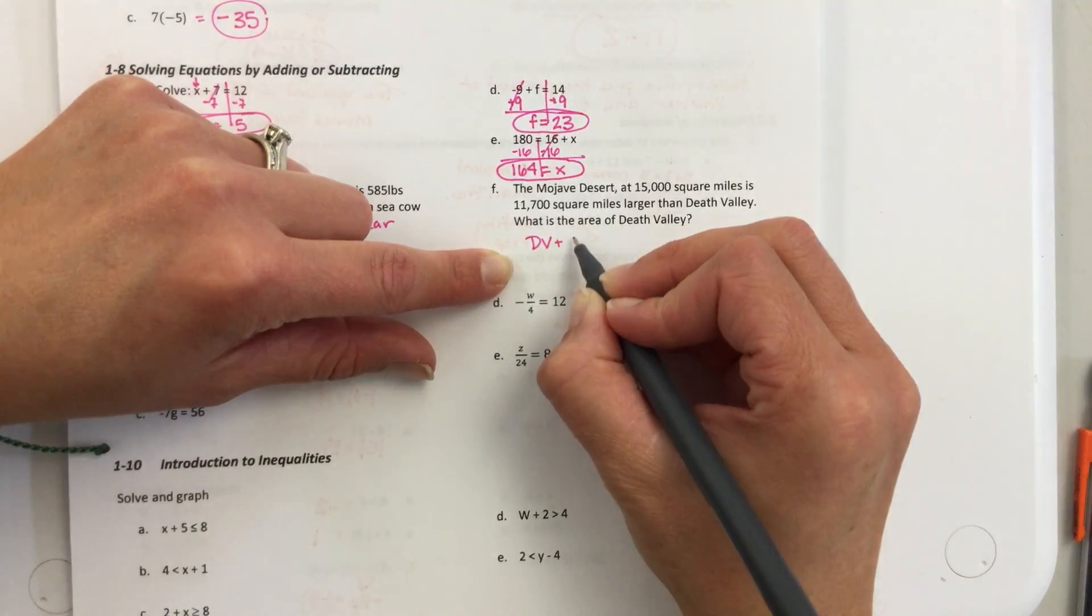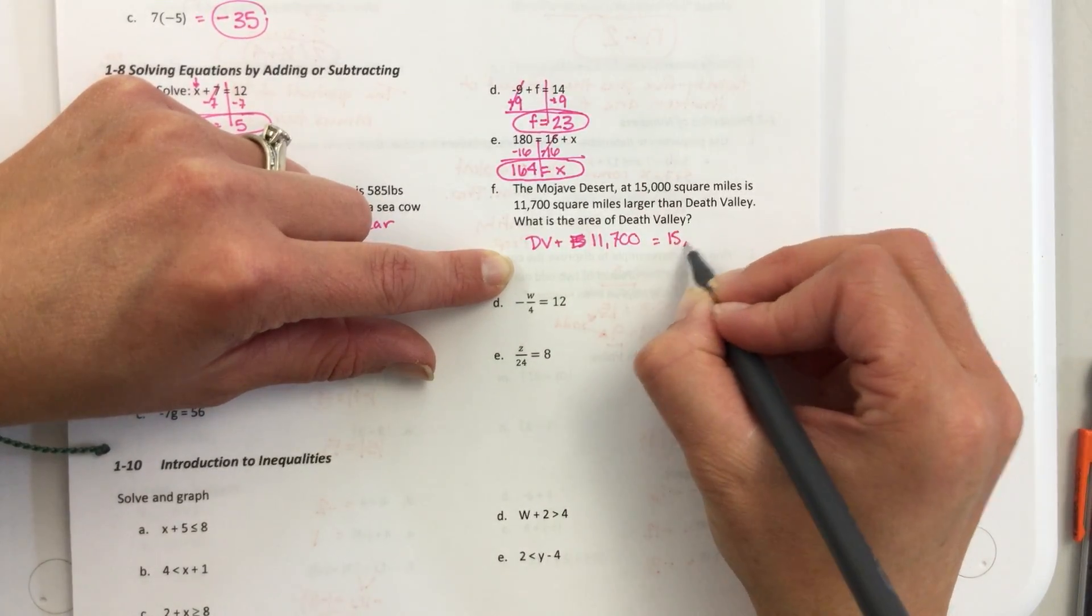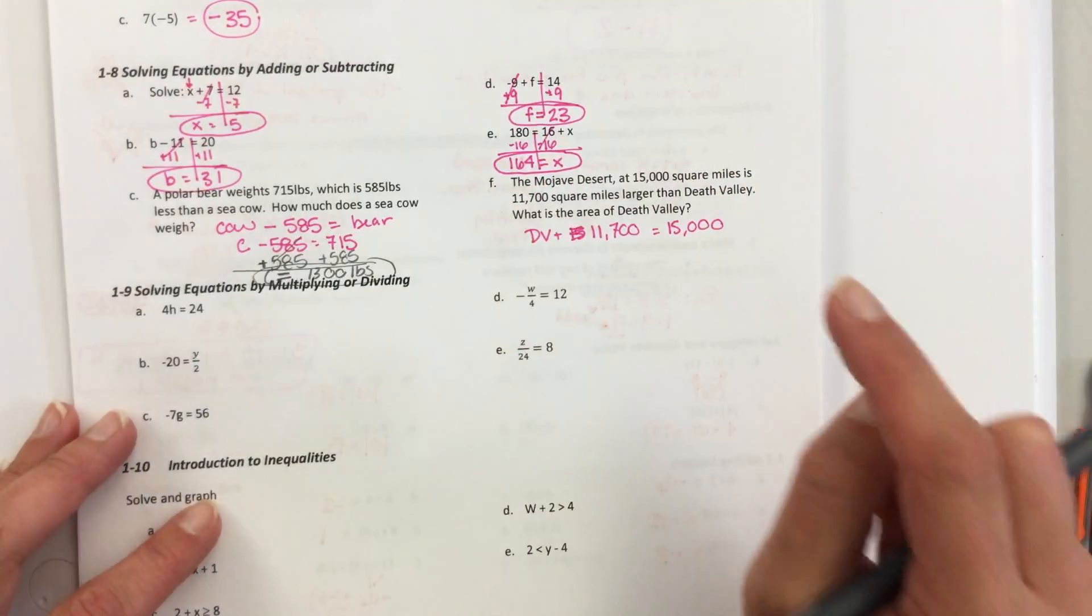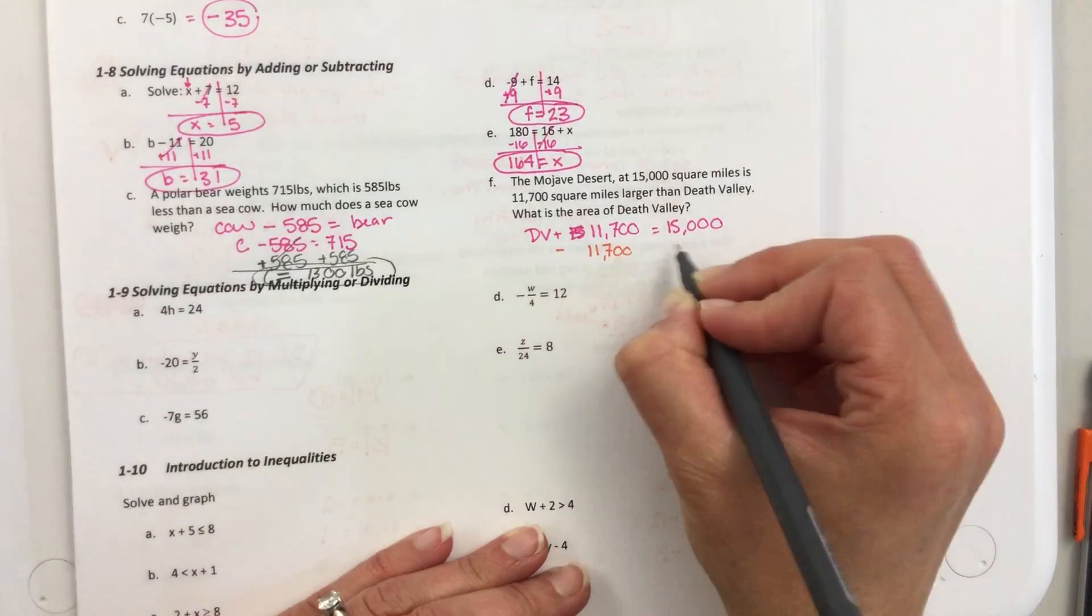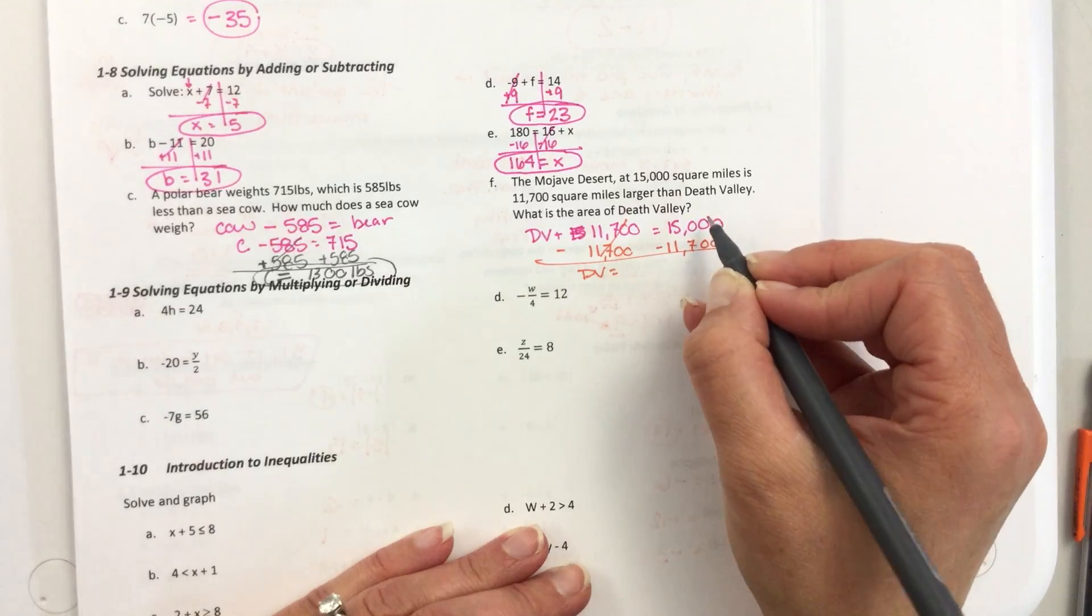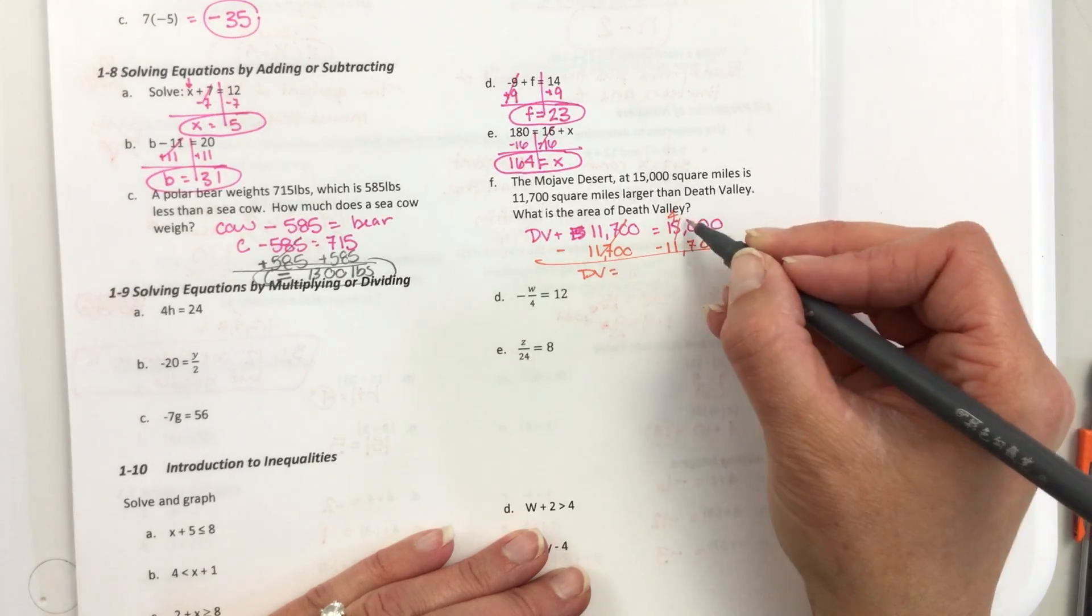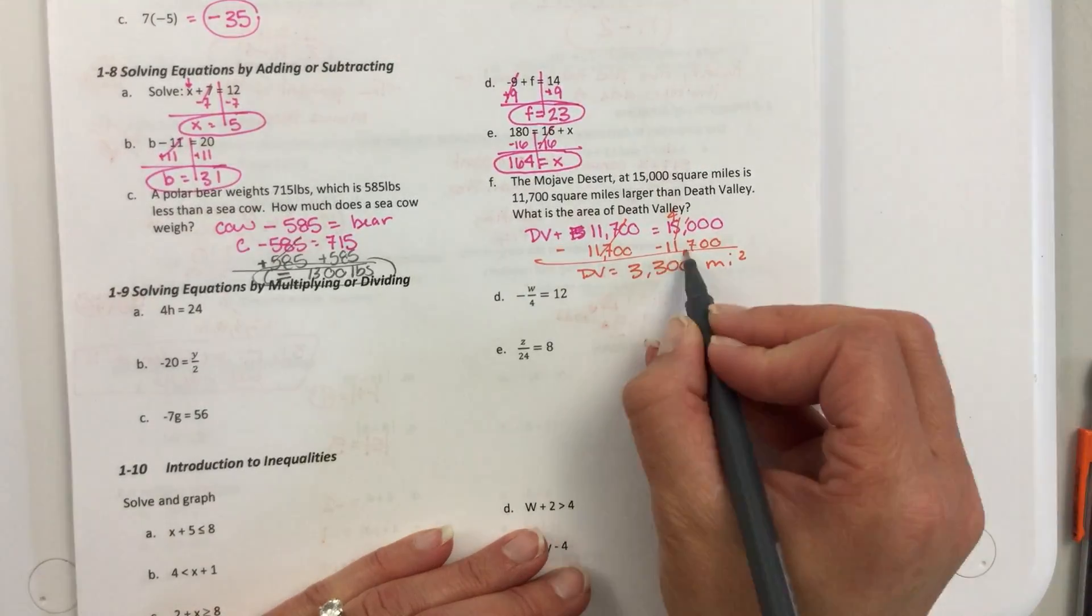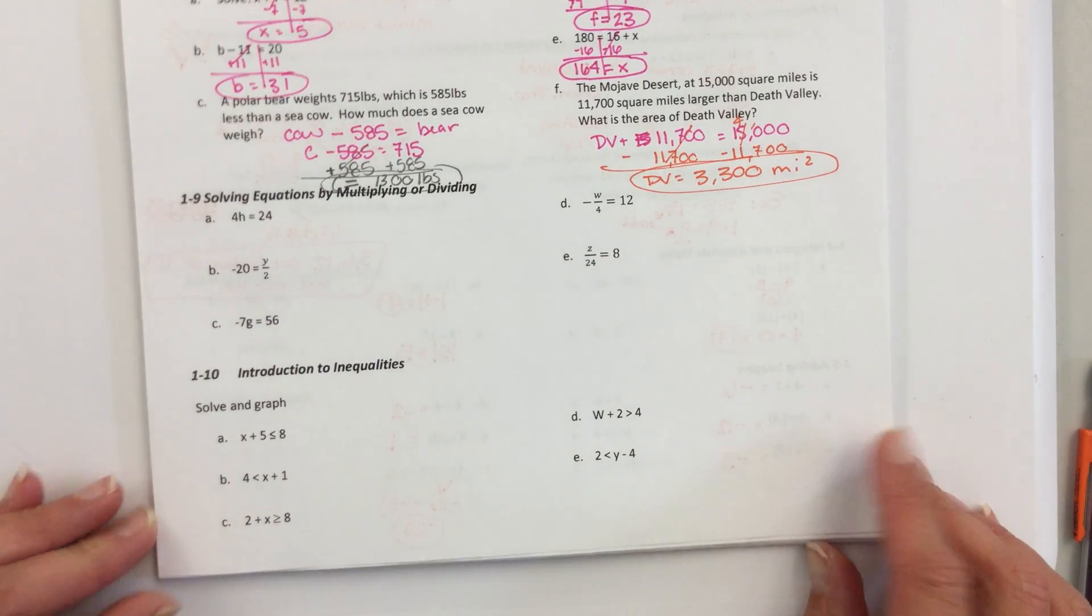Okay, the Mojave Desert at 15,000 square miles is 11,700 square miles larger than Death Valley. What is the area of Death Valley? So, they're saying that the Death Valley is smaller, right? Yep. So, Death Valley plus the 15, sorry, plus 11,700 equals the Mojave, which is 15,000. Nope, because Mojave is bigger than Death Valley, so we have to subtract. So, that's the other thing. Make sure that you guys check to make sure your answers seem reasonable after you do it. So, Death Valley is, what did you say? 3,300, right? Yeah, 3,300 and then square miles.